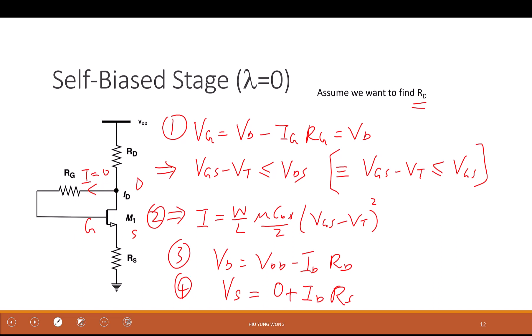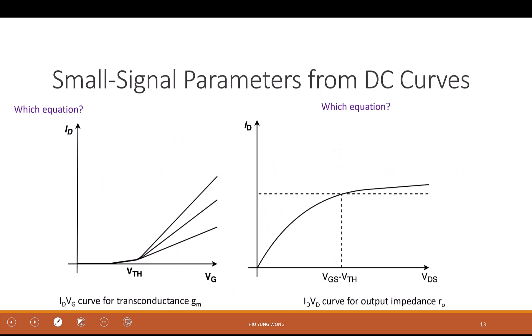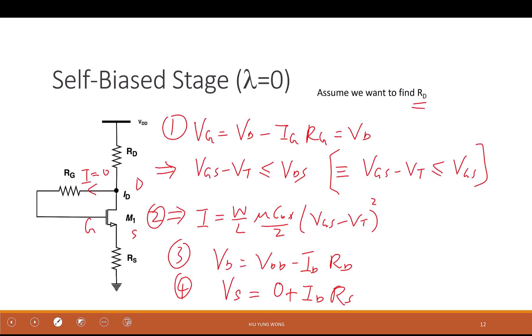For all of this, I want you to appreciate the equations we have set up — that is the main point. Don't worry about the mathematical skill of solving them. So that's it for self-biasing. We've designed a circuit, it's biased in saturation, we know what id is and what vg is.